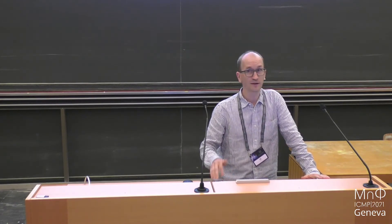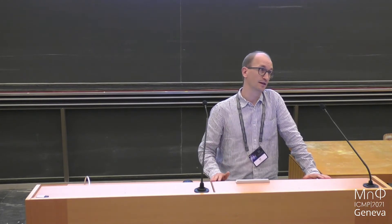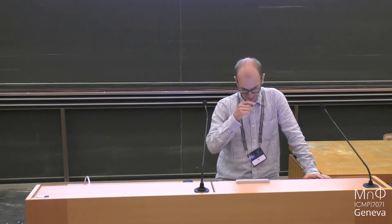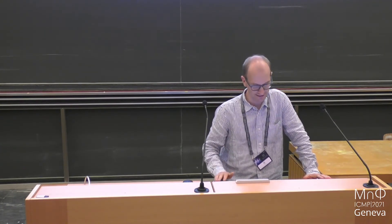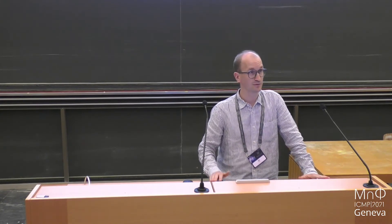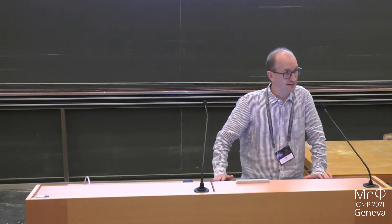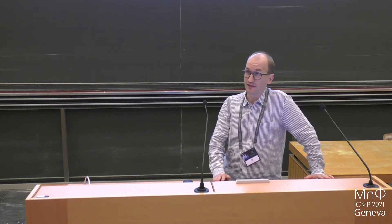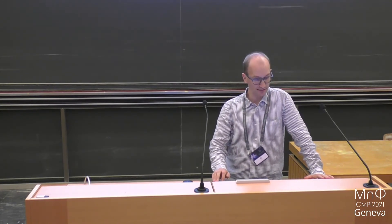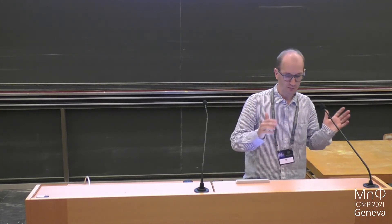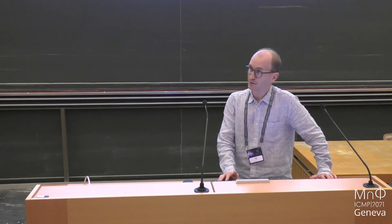What is special about ADS-CFT duality — and why I and many others work on it — is that it involves gravitational physics. This duality basically tells us that quantum gravity, whatever that is, in a particular space — anti-de-Sitter space, ADS — is in fact just a different way of referring to what we might call quantum field theory on a particular fixed background, let's say a flat background. The lowercase 'a' in front of ADS is because we really talk about all solutions that are asymptotic to ADS.